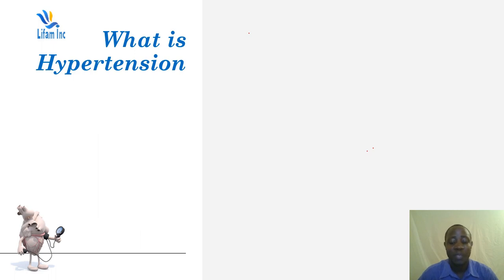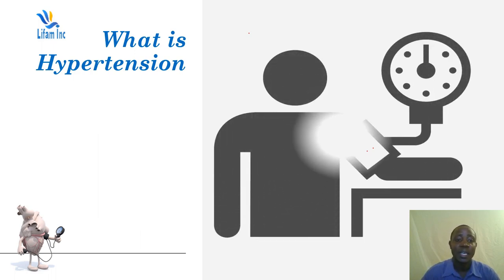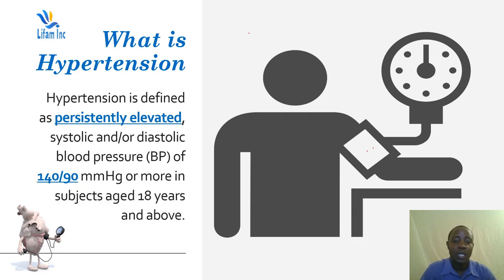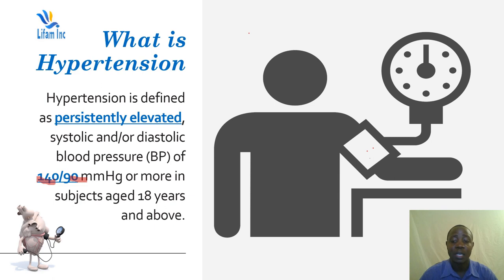Hypertension simply means persistent elevated high blood pressure, where both systolic and diastolic blood pressure are high. For systolic blood pressure, we are talking of 140 mmHg and above, and diastolic 90 mmHg and above. This definition applies to people 18 years and above.